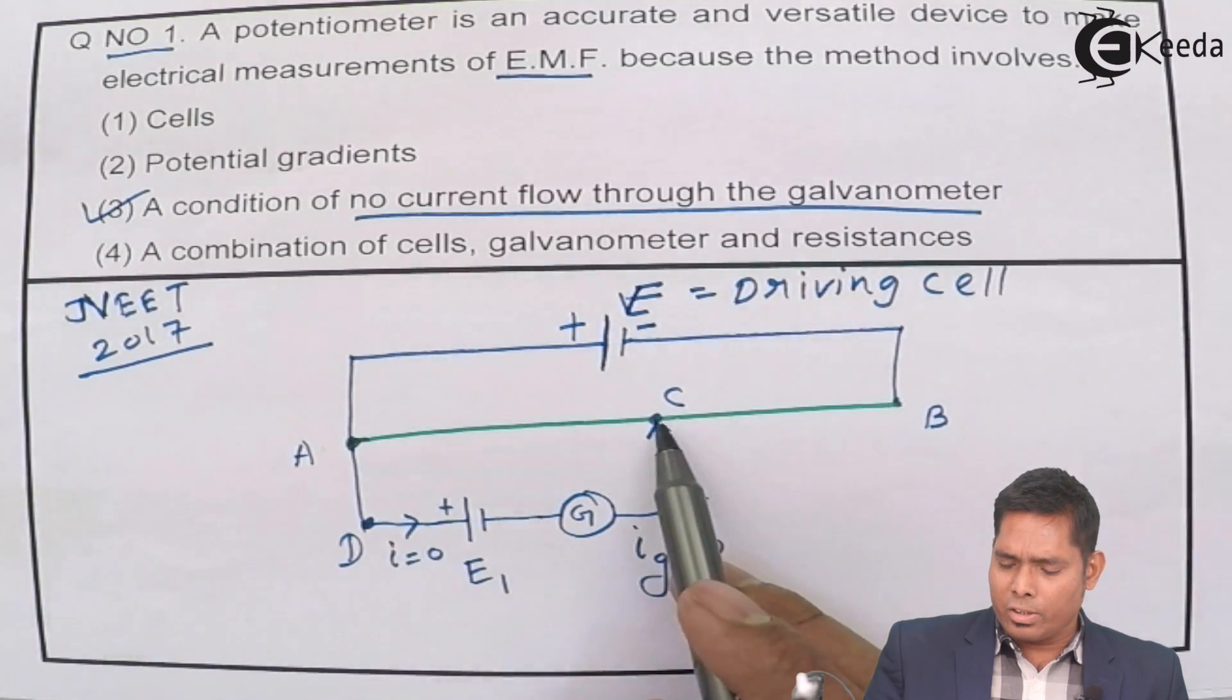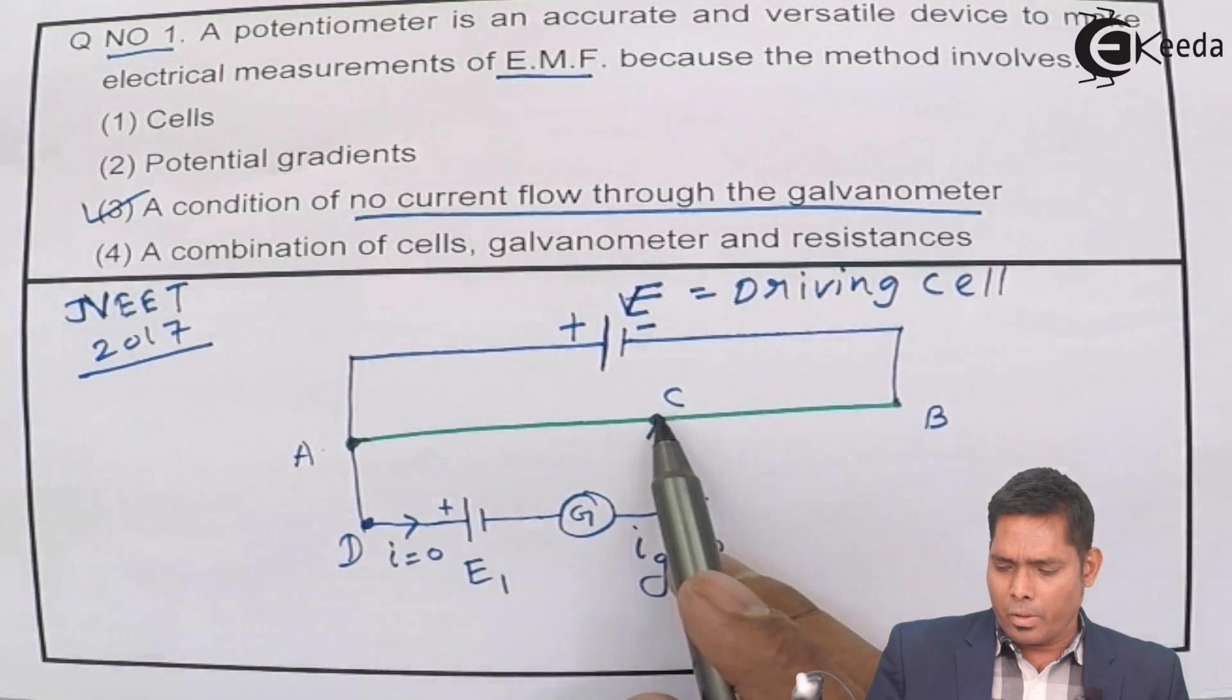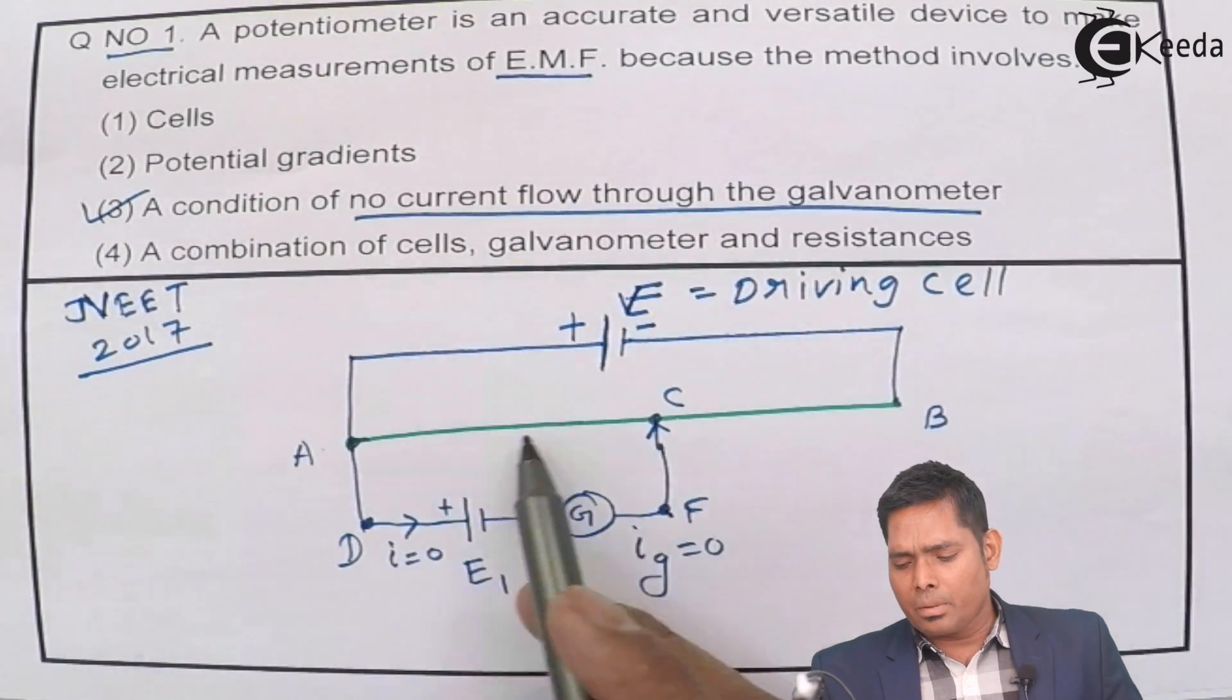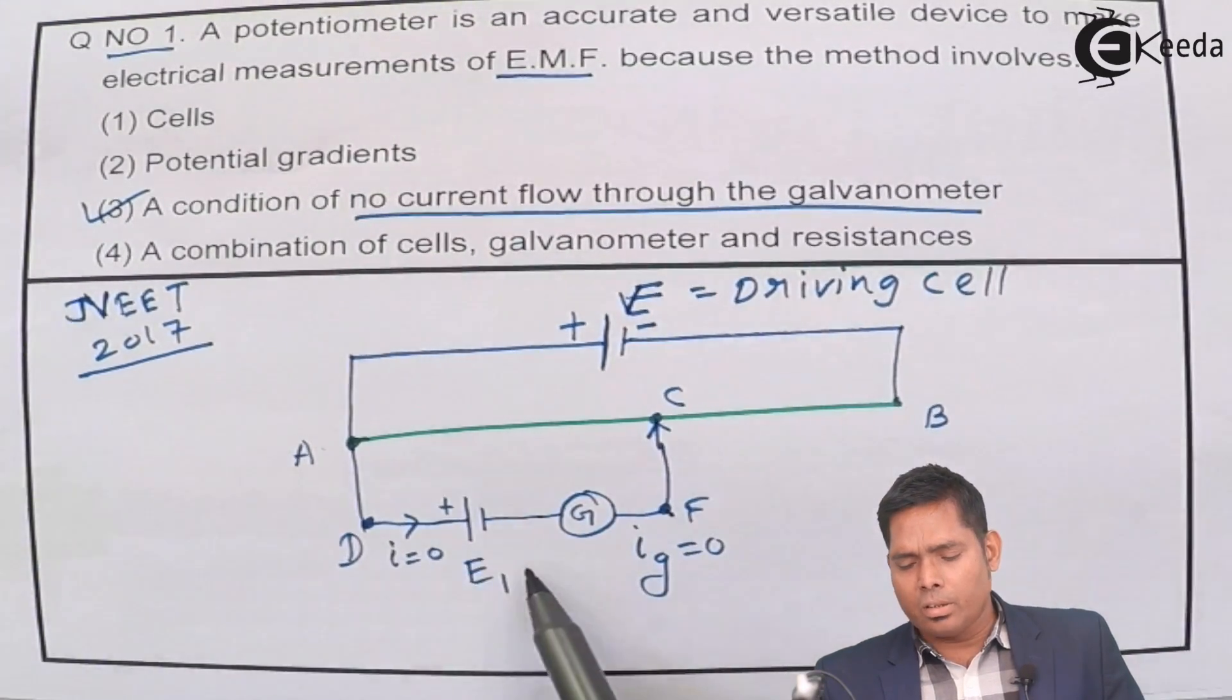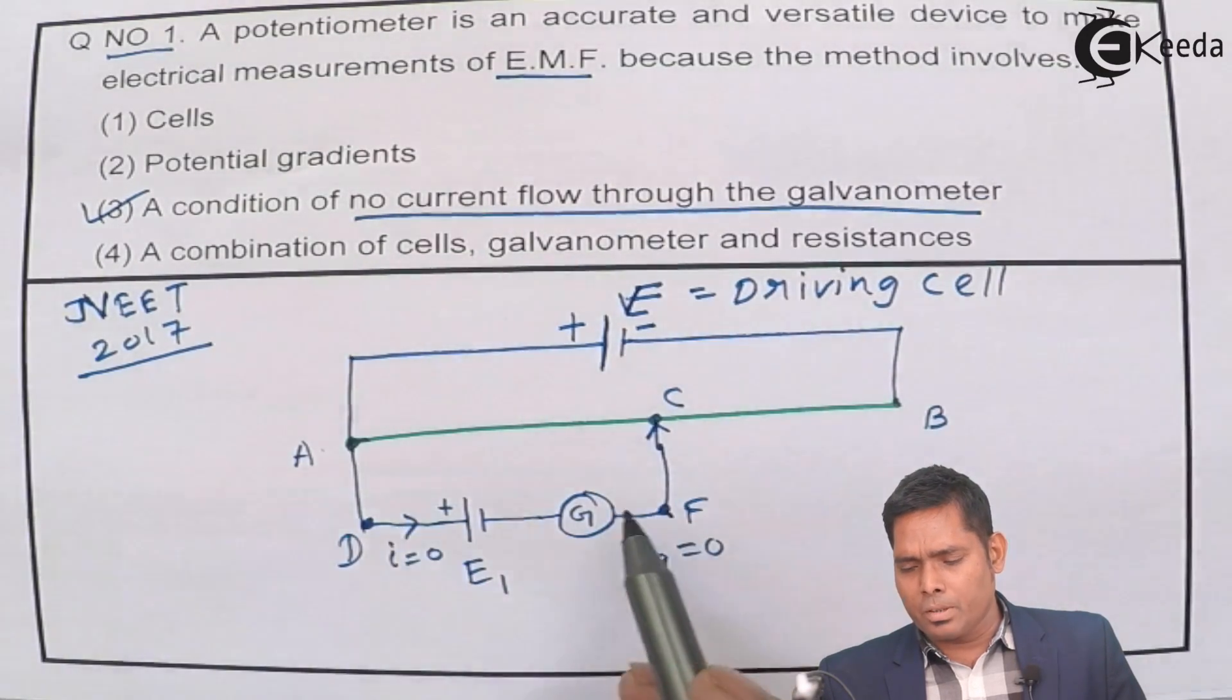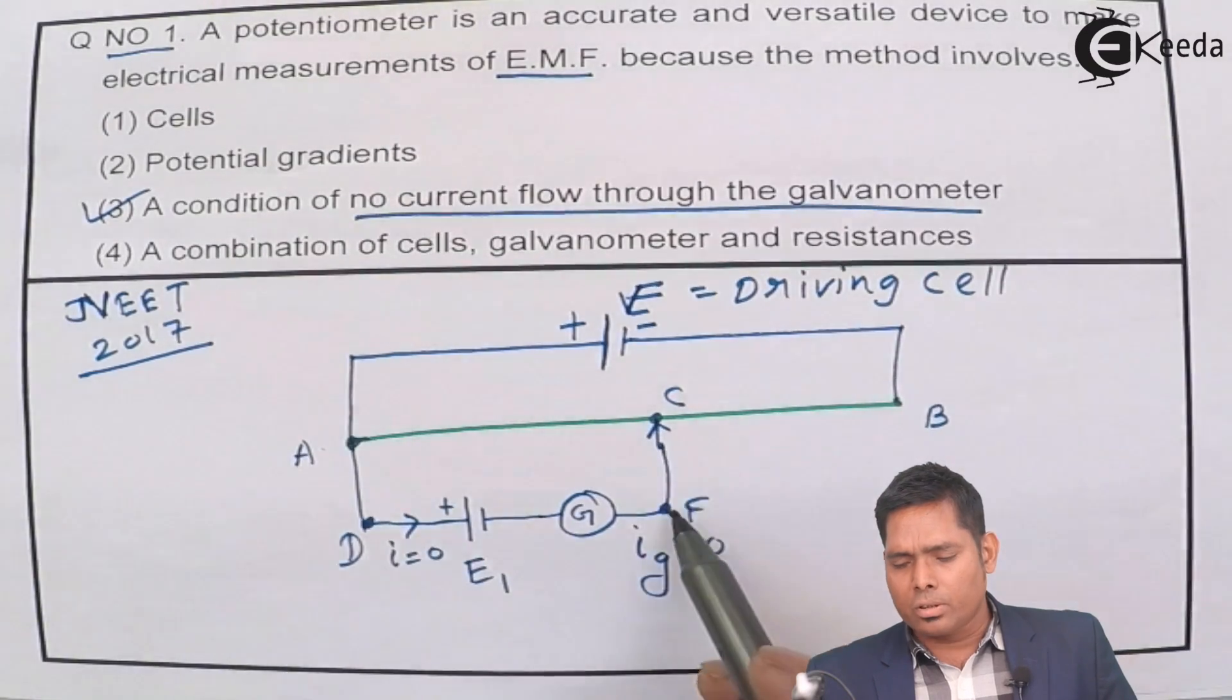So when it shows no deflection, that point is the point and the point here, the length of this wire, potentiometer wire, creates such a potential difference which must be equal to the E of the cell. Because if these two points and these two points have the same potential difference, then the current will not pass through this.